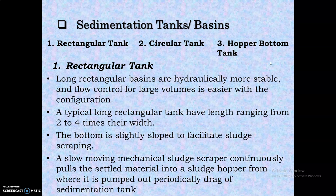In the continuous flow type tank, the flow velocity is only reduced. In the intermittent tank, water has to be allowed to rest, whereas in the continuous type, only the velocity is reduced and the flow is continuous.